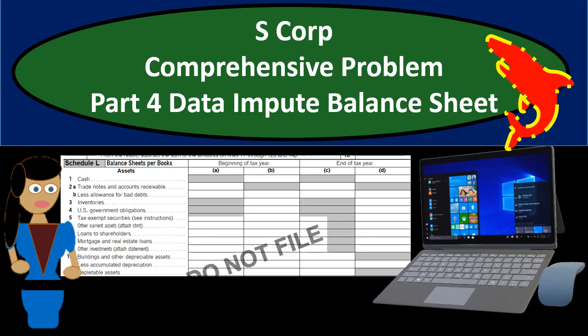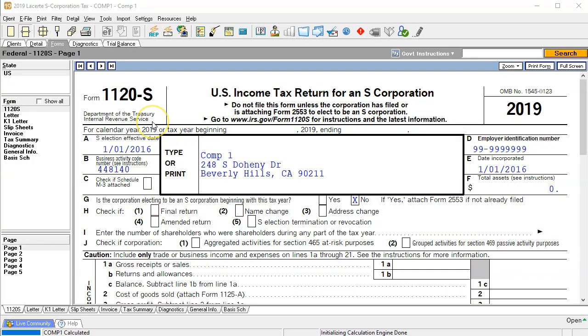In this presentation we will continue with our S corporation comprehensive problem. We are now in part four where we're going to be entering data into the return — specifically data for the balance sheet. We'll be entering it into our ATX software, which is owned by the owner of QuickBooks, but it'll be a similar process if you're using other software too. We're going to start with entering the balance sheet, which will be Schedule L on the 1120S.